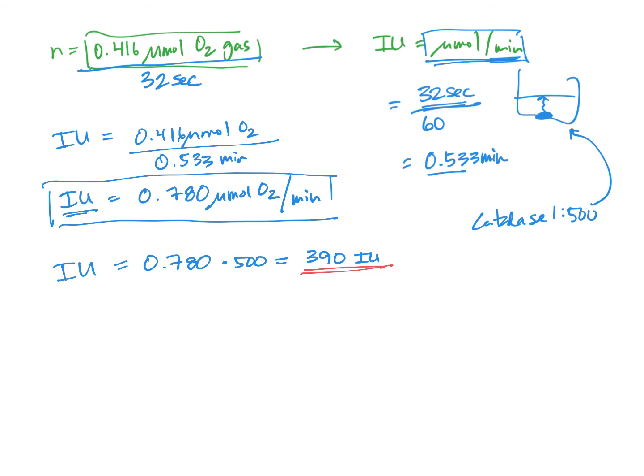So what we've calculated here is that in your tube of catalase enzyme source, we've got 390 IU of activity of catalase. Now, we didn't actually measure the entire tube, right? We only measured 5 microliters of the catalase sample.